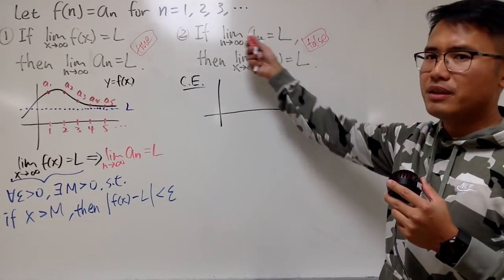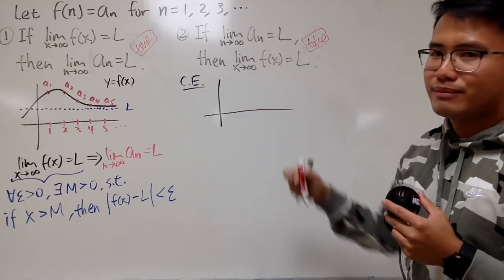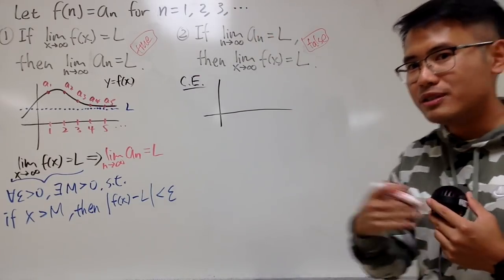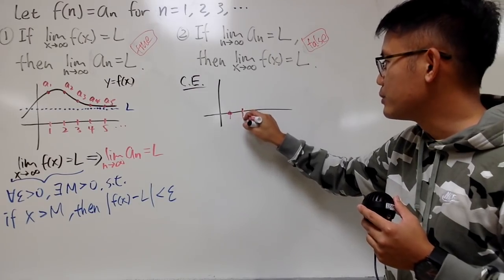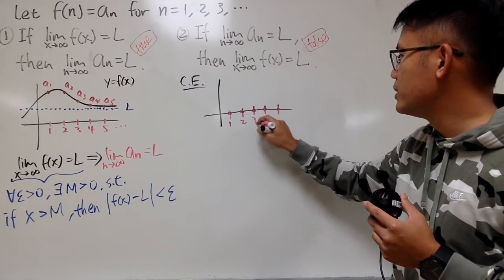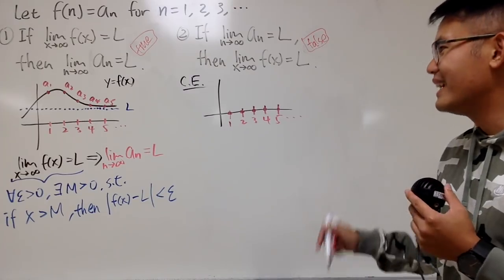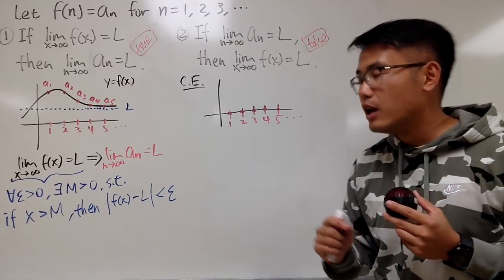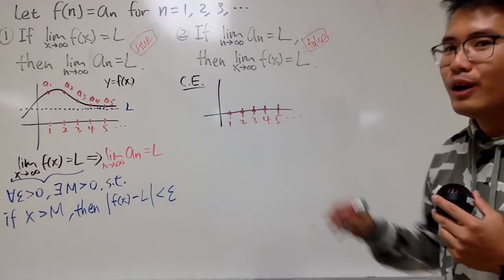This is a weaker statement because n is just positive whole numbers, and I want the sequence to converge to L. To graph aₙ, it's just a bunch of dots. I'm going to let aₙ = 0 for all n. So when n = 1, it's at 0; n = 2, it's 0; n = 3, 0; n = 4, 0, and so on. So aₙ will of course go to 0. Now I just have to think about the function — all I need is a function that passes through all these points but does not converge to a horizontal asymptote.